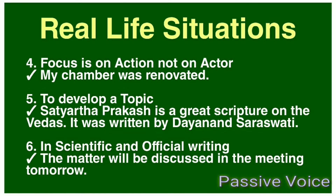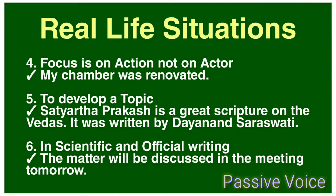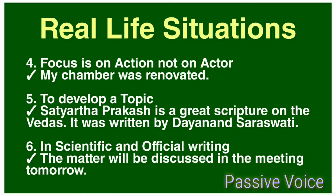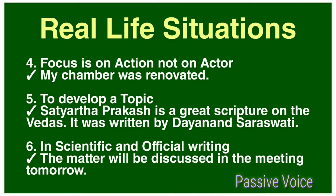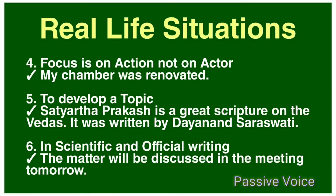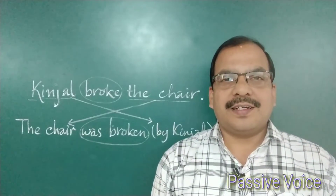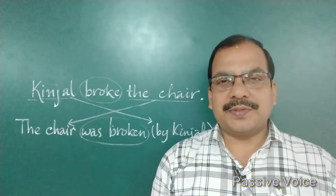When we develop a topic or an idea — for example, 'Satyartha Prakash is a great scripture on the Vedas. It was written by Dayananda Saraswati' — we never say 'Dayananda Saraswati wrote the book'; usually we say 'It was written by Dayananda Saraswati.' And finally, in scientific or official writing we use the passive form — for example, 'The matter will be discussed in the meeting tomorrow.'